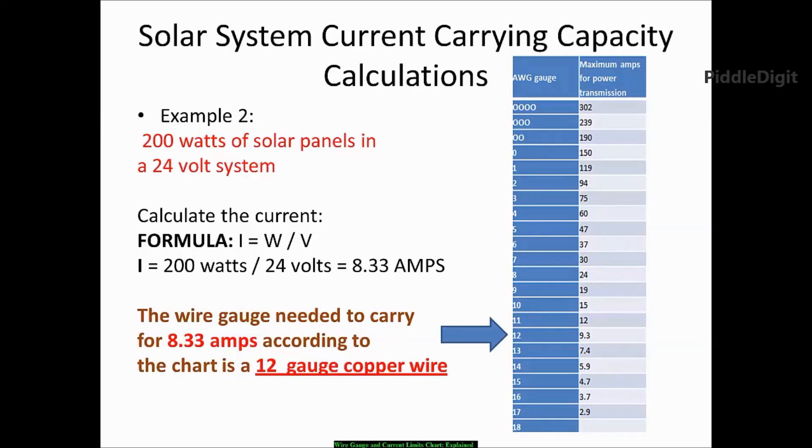Because remember, we always want to round up in this case. So in this example, we are going to choose the current of 9.3 amps, which correlates to indeed a 12 gauge wire. So according to the chart, we will need at least a 12 gauge wire to carry 8.33 amps of current in a 24 volt system with 200 watts of solar panels.